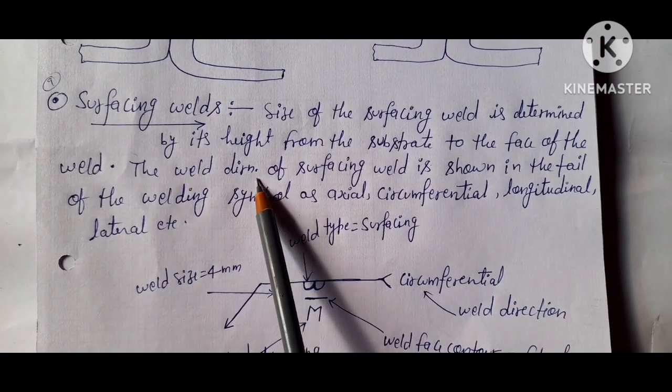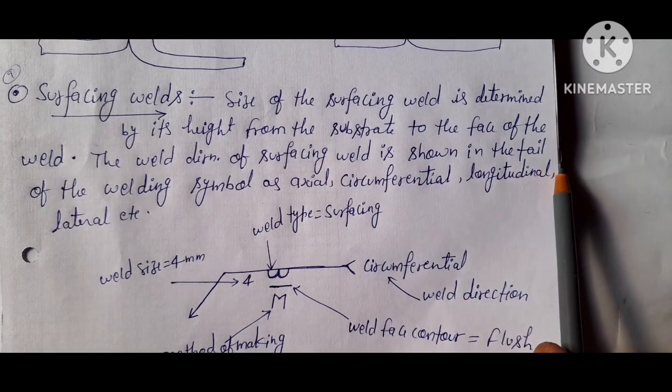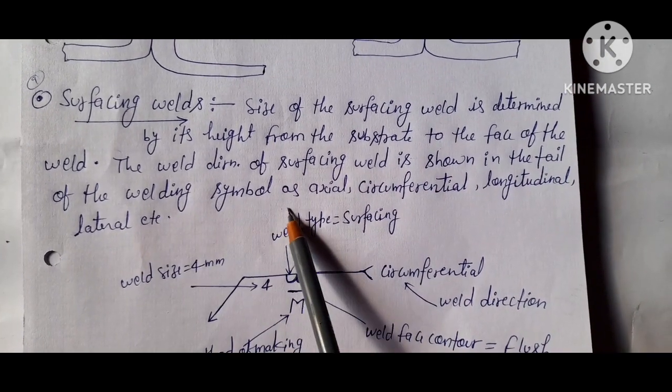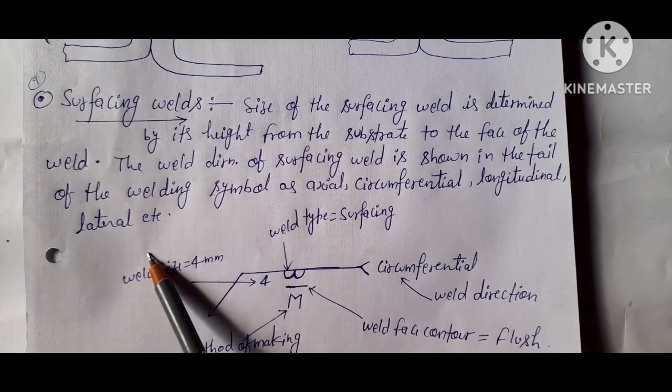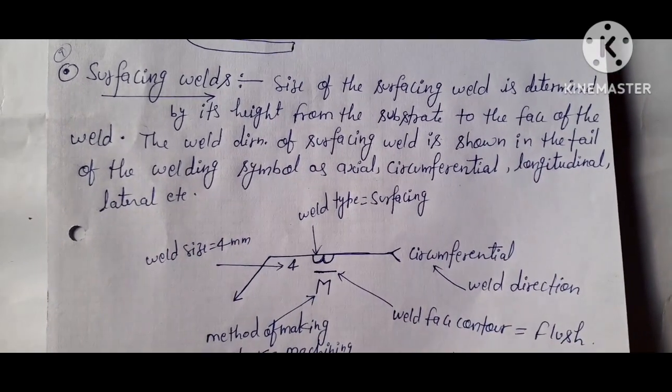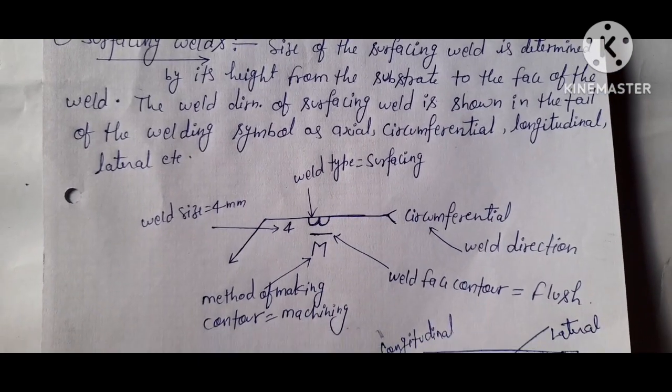The weld direction of surfacing weld is shown in the tail of the welding symbol as axial, circumferential, longitudinal, or lateral. These many directions are given in the tail.